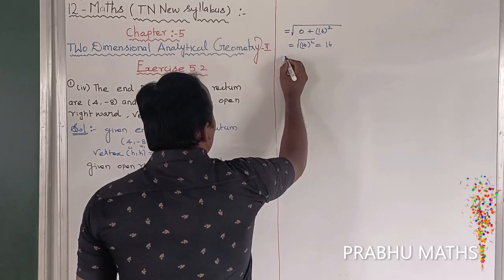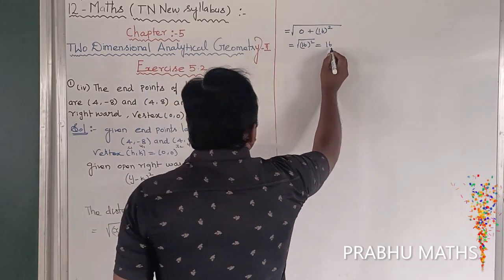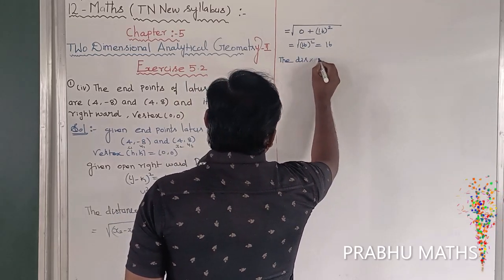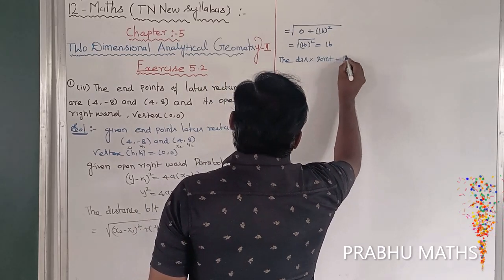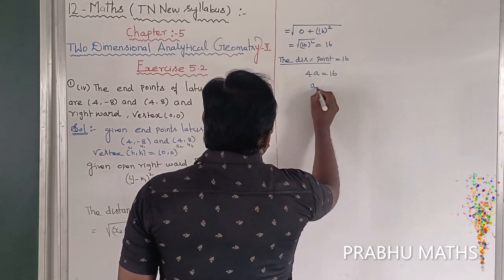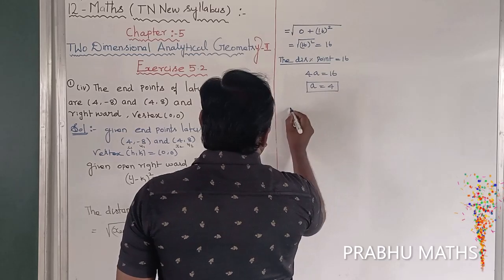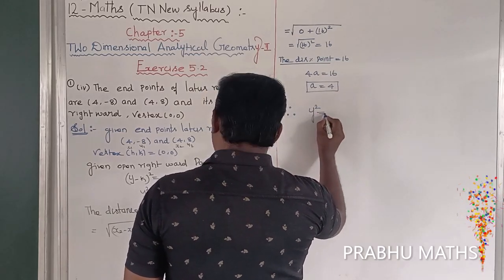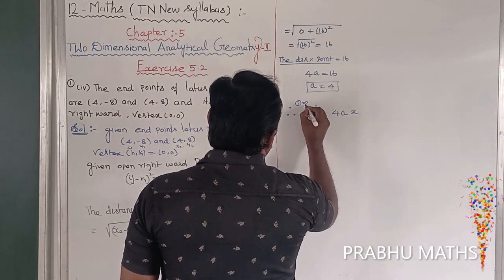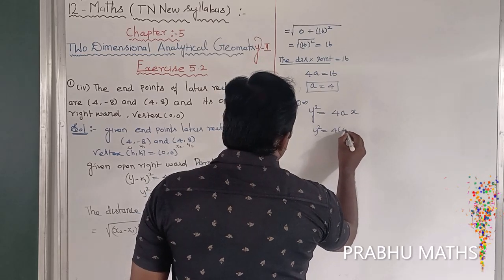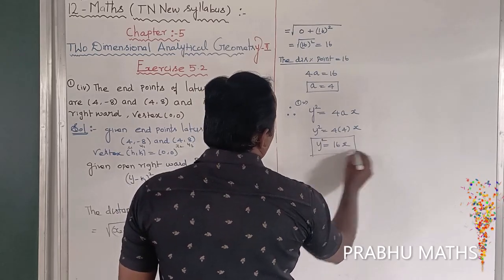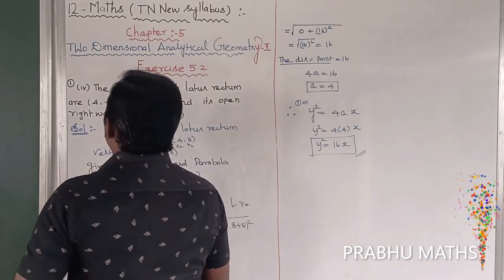So the distance between the endpoints is 16, which means 4a = 16, and therefore a = 4. Substituting back into equation 1: y² = 4(4)x, which gives y² = 16x. That is the final answer for the 4th subdivision.